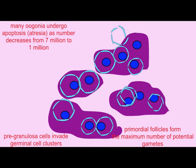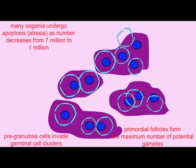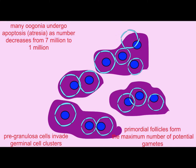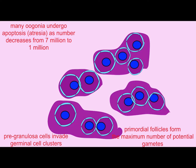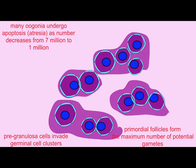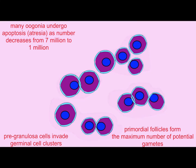This then forms the primordial follicles, in which a primary oocyte — which has paused in meiosis I at the diplotene stage — is surrounded by flattened granulosa cells, and this entire structure forms a follicle.